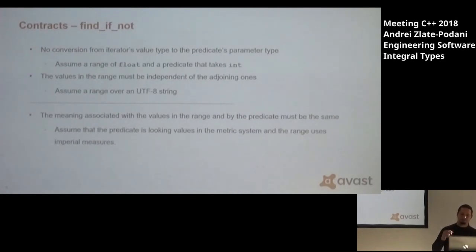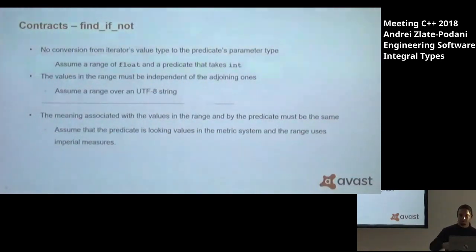And there might be other ones. For example, you do not want in the predicate to invalidate the iterators, right? You cannot reach these conclusions, like, what kind of things you need to observe in order for the function to work correctly if you just know the signature of the function, right? If you have a declaration and you look at it, you cannot say I have to do this. Otherwise, the result is undefined. This is why contracts are very useful and basically they should be adopted at a wide scale.